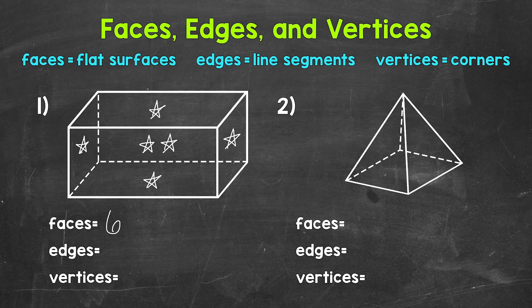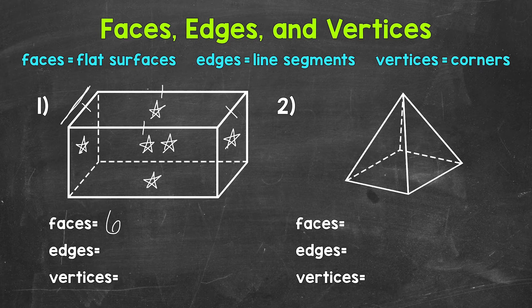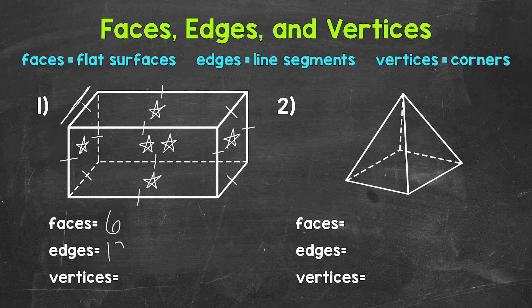Now let's identify and count the number of edges — those are the line segments created by two faces meeting. Let's start at the top and go around: one, two, three, four edges. Now let's go around the bottom: five, six, seven, eight edges. Now for the sides: nine, ten, eleven, twelve edges. So twelve total edges.